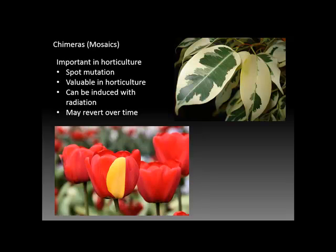Tulips are a great example because some of the most valuable plants in history have been tulips with mutations. In addition to occurring naturally, they can be induced with radiation. The problem with chimeras has been that they may revert back to the unmutated state either in the short or long term. It has been through the use of micropropagation and tissue culture that some of these chimeras have been able to be replicated almost without any limits — almost infinitely replicated versus more traditional methods of propagation.